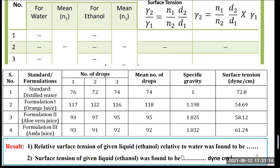In this way we can get the relative surface tension of a given liquid — for example, ethanol relative to water. Surface tension of a given liquid was found to be a certain value in dynes per centimeter — it may be 50 or 60, since water is 72.8. We can calculate the surface tension using the number of drops, the density ratio, and the known surface tension of water.